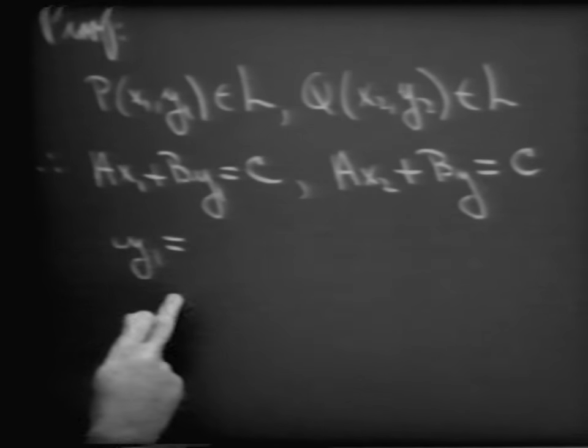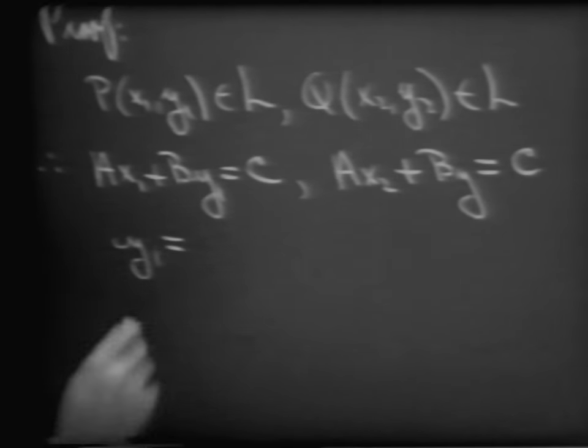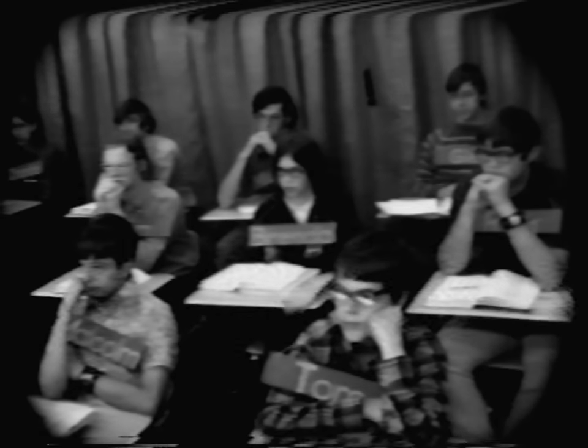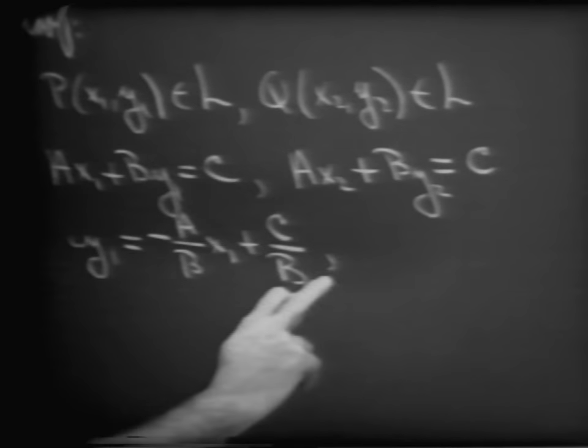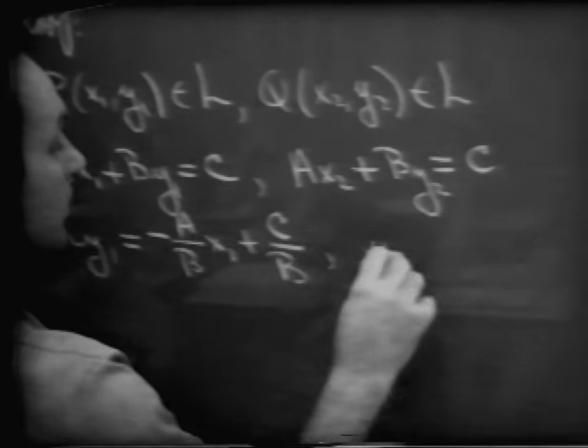Therefore A times x sub 1 plus B times y sub 1 is equal to C must be true. And we can also say about the second point that its coordinates must satisfy the equation, so A times x sub 2 plus B times y sub 2 is equal to C. Now let's look at this pattern and try to get y sub 1 equal to something. We may subtract A x sub 1 from both sides and divide by B, so y sub 1 equals the opposite of A over B times x sub 1 plus C over B. Solving the second equation for y sub 2: y sub 2 equals the opposite of A over B times x sub 2 plus C over B.